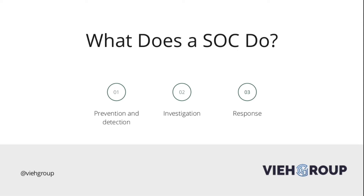First, let's talk about preventing and detection. When it comes to cybersecurity, prevention is always going to be more effective than reaction. Rather than responding to threats as they happen, the SOC works to monitor the network around the clock. By doing so, the SOC team can detect malicious activity and prevent it before it can cause any harm. When the SOC analyst sees something suspicious, they gather as much information as they can for a deeper investigation.